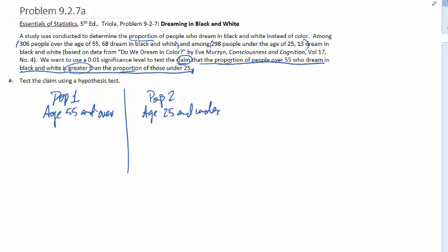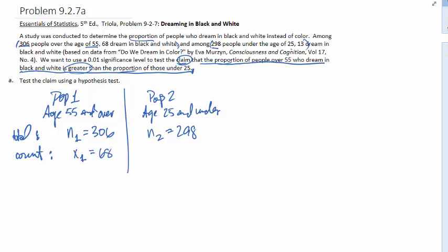Out of these populations, we want to get the statistics. For those 55 and over, the total — we usually call that N — N1 is 306 total. For population two, N2 is 298. Now, how many people dream in black and white? We'll call that the count, denoted by X — that's the number of successes, where success is dreaming in black and white. For population 55 and over, X1 = 68. For population 25 and under, X2 = 13.